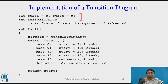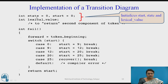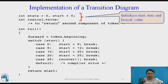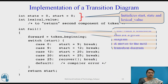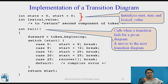Now, the coding part. In the code, the current state is initially set to 0. The first transition diagram starts at 0, so 'start' holds 0. The lexical value is declared but not yet set. The fail function is initialized here — as described earlier, whenever a transition diagram fails for a given input, it moves to the next transition diagram.